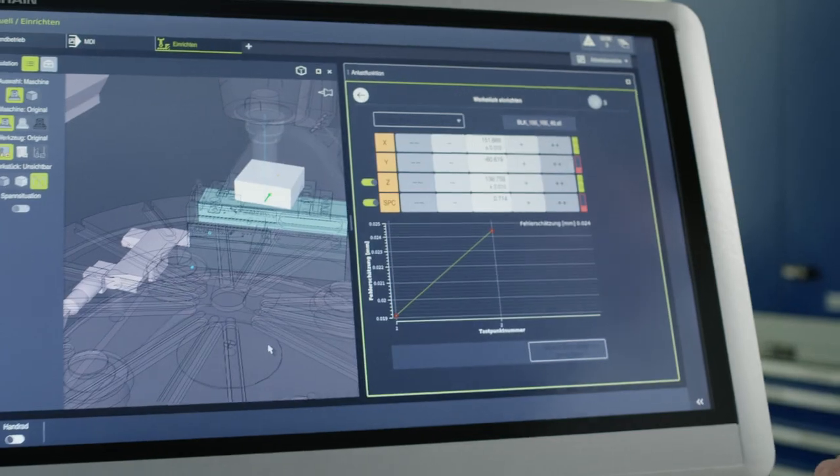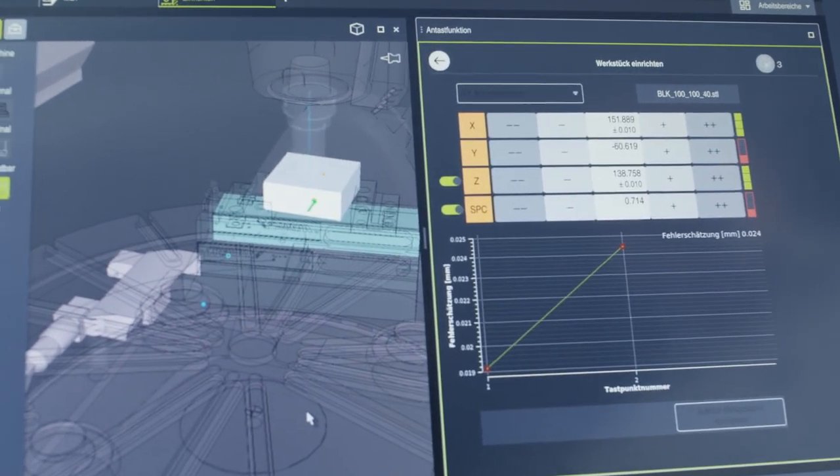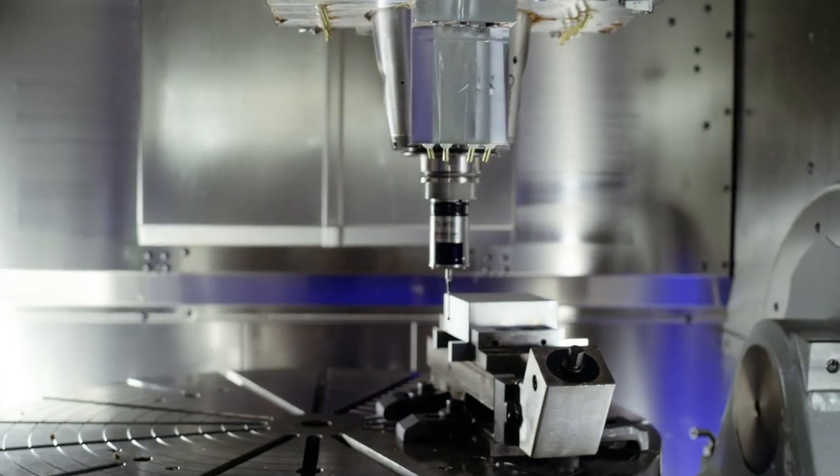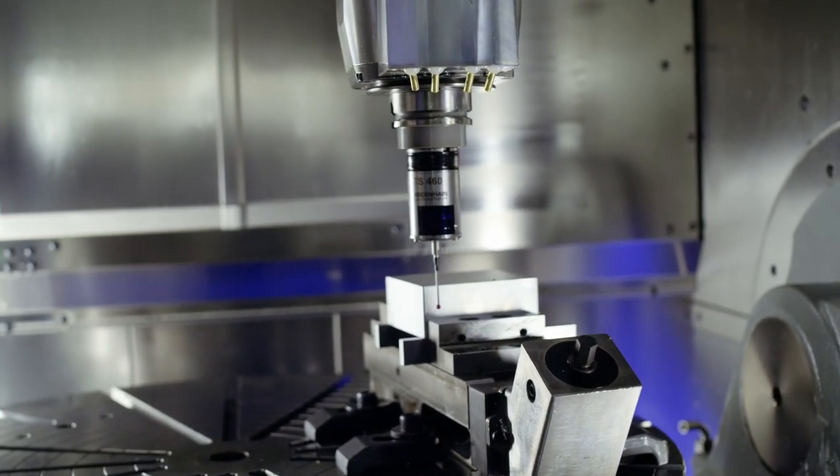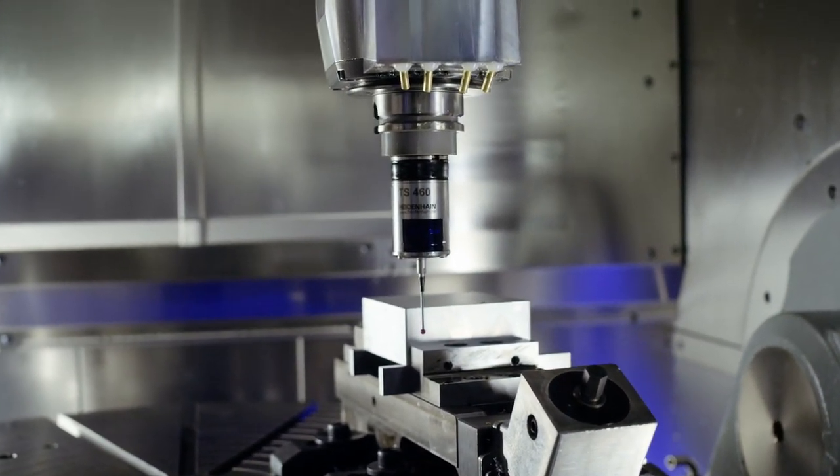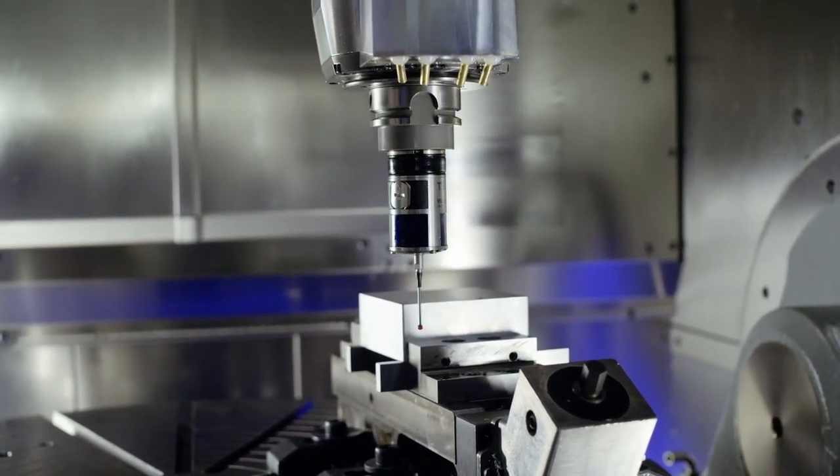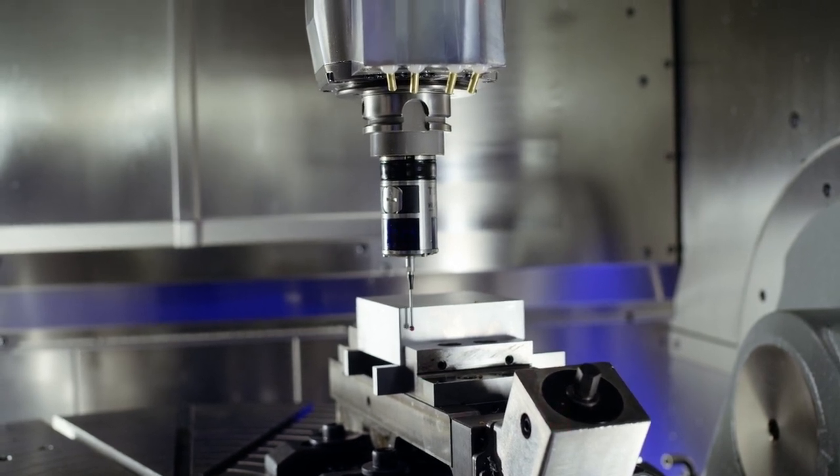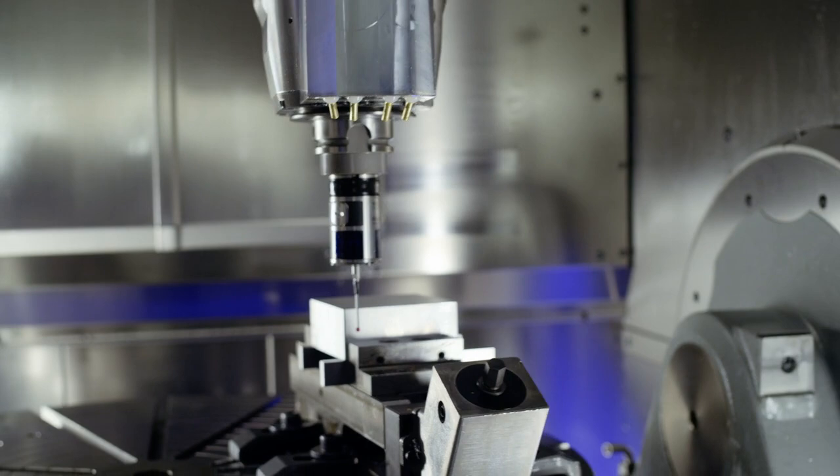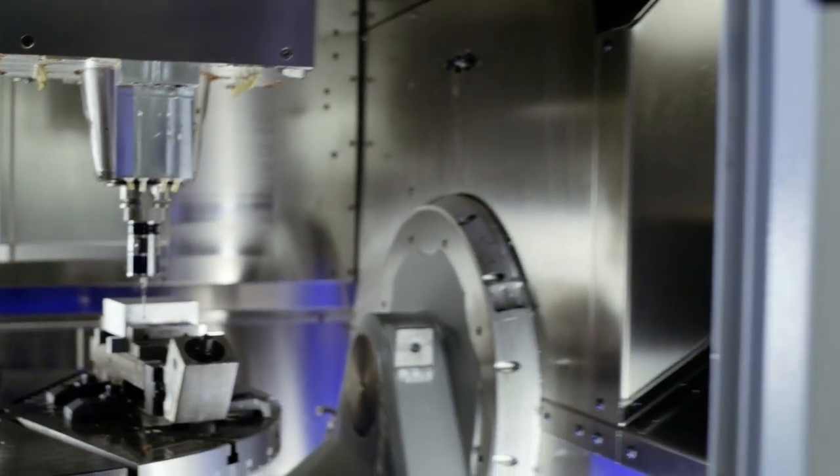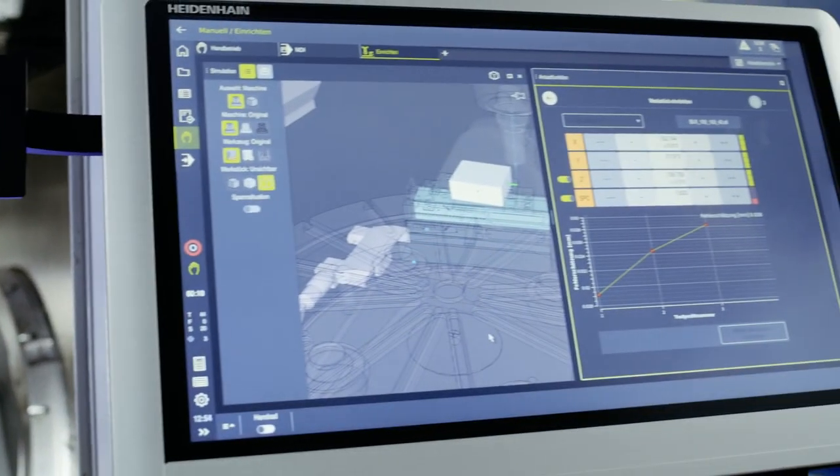The TNC7 has detected the workpiece, and now I can measure it from the front as well. The first probing point, and the second probing point.